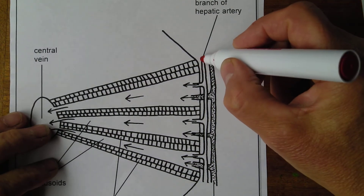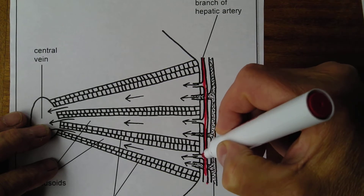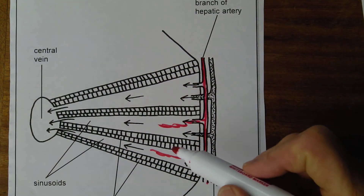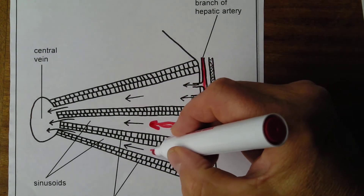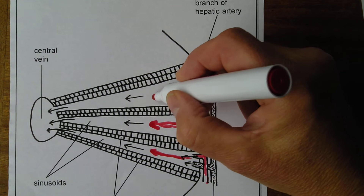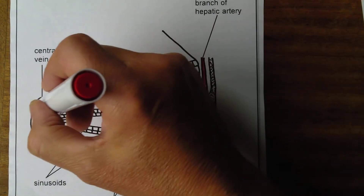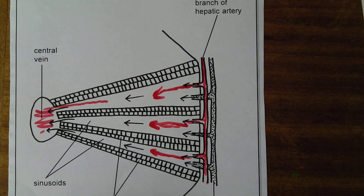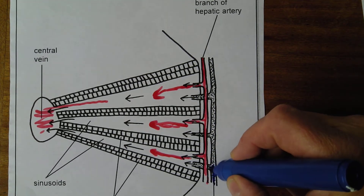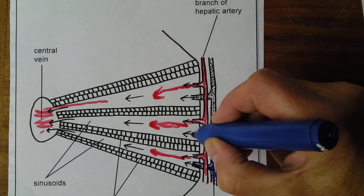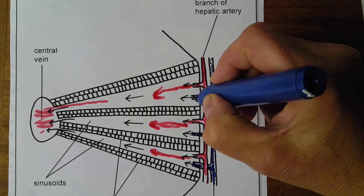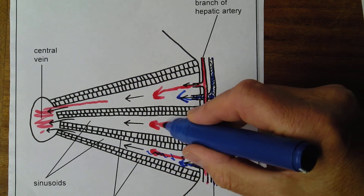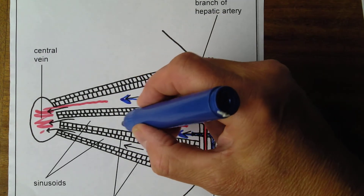In this next diagram we have a branch of the hepatic artery putting blood into the sinusoid. The blood flows from the outside of the lobule to the center, towards the central collecting vein. At the same time, blood from the hepatic portal vein — which is partly oxygenated — also goes into the liver sinusoid and mixes with blood from the hepatic artery, and all that blood drains towards the central vein.